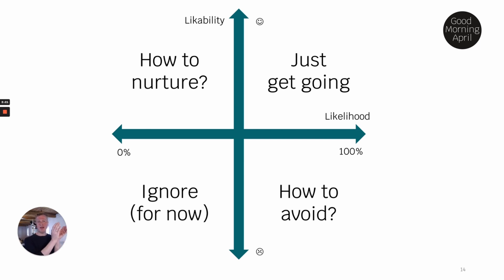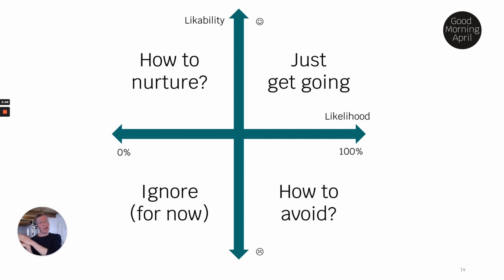In the area with high likelihood and high likability — just get going. In the area with low likability and low likelihood — we can ignore that for now. But in the two other areas: where we have high likability but not much likelihood, how can we make that happen? How can we nurture it, because we'd really like it to? And where we have high likelihood but don't like it — how can we actively avoid that? Now we're stepping into the area of combining signals with strategy.